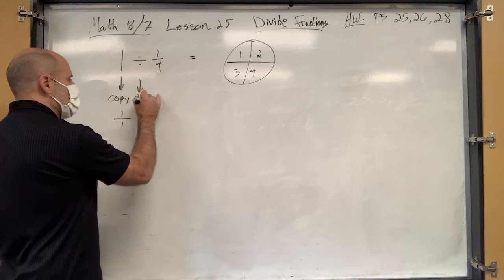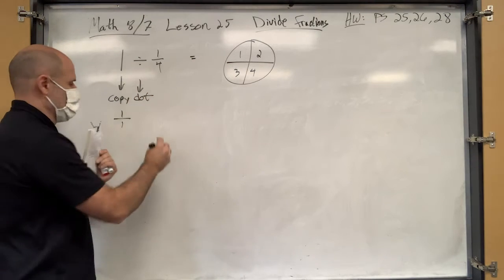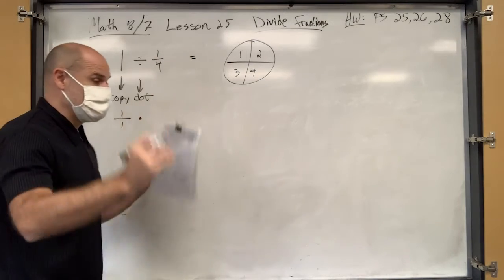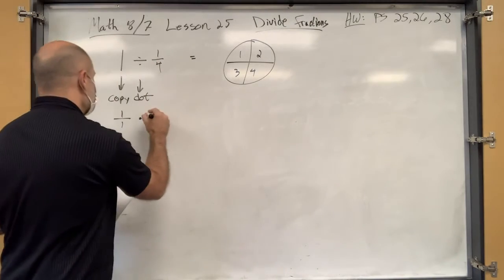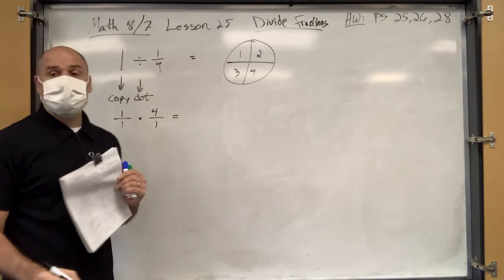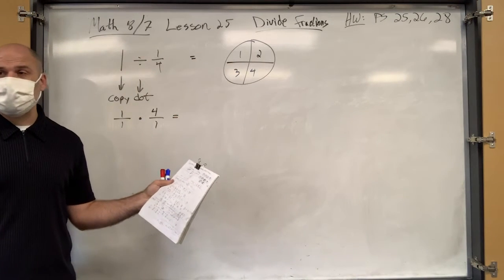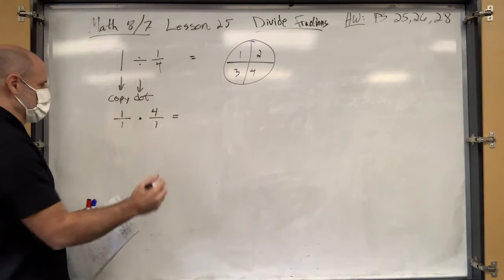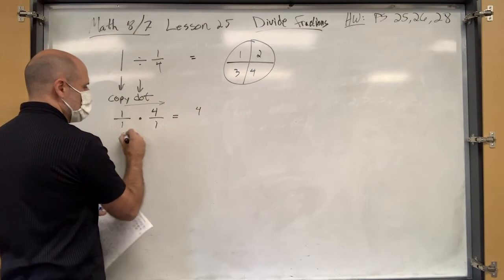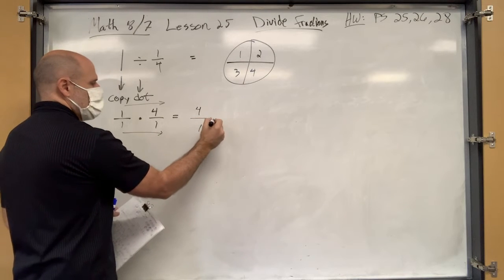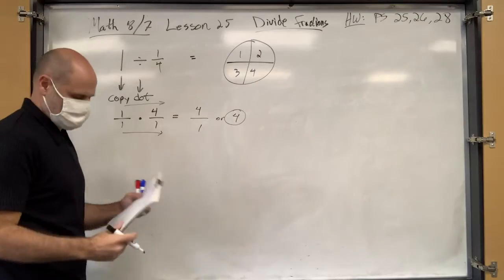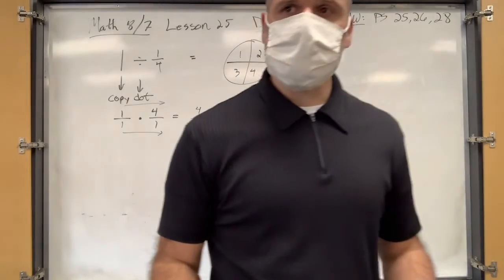And then dot. What's dot mean in math? Multiply. Multiply. Am I going to flop this one fourth? Alright, I'm going to do it, I'm going to do it. Okay? You did. Alright. And then, you know how to multiply. How do you multiply fractions? Just go straight across. Straight across. One times four is four. One times one is one. So you can say four over one, or just four, right? So far so good? Yeah.